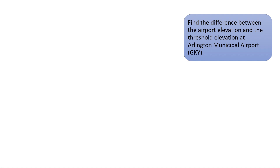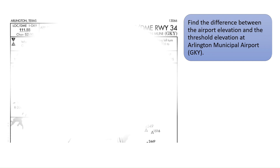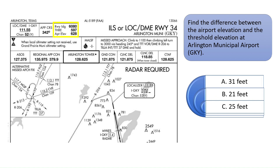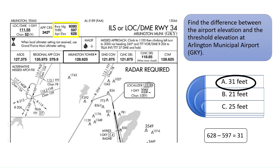Find the difference between the airport elevation and the threshold elevation at Arlington Municipal Airport. The box highlighted in the upper left of this ILS approach plate shows the runway length of 6,080 feet, the threshold elevation of 597 feet, and the airport elevation of 628 feet. Subtract the threshold elevation of 597 feet from the airport elevation of 628 feet to find the difference of 31 feet. The correct answer is A.